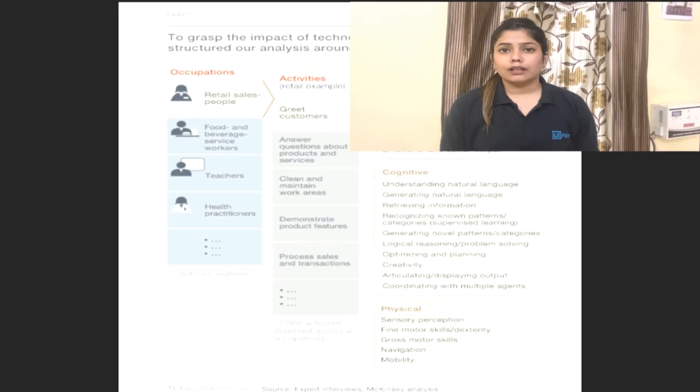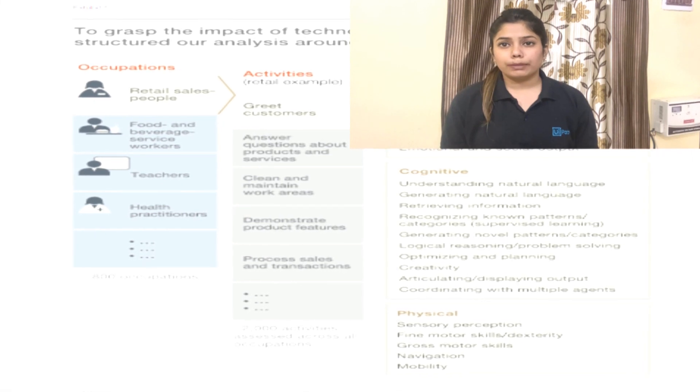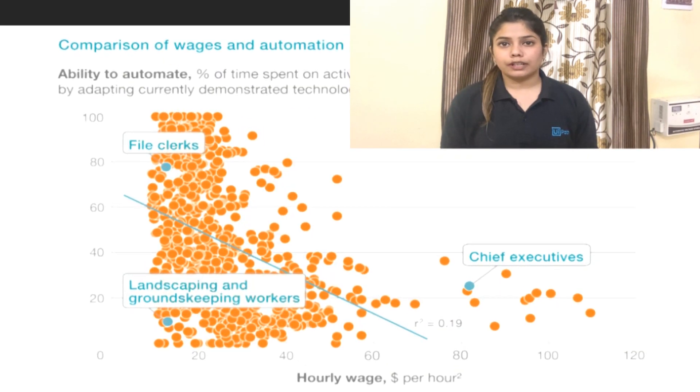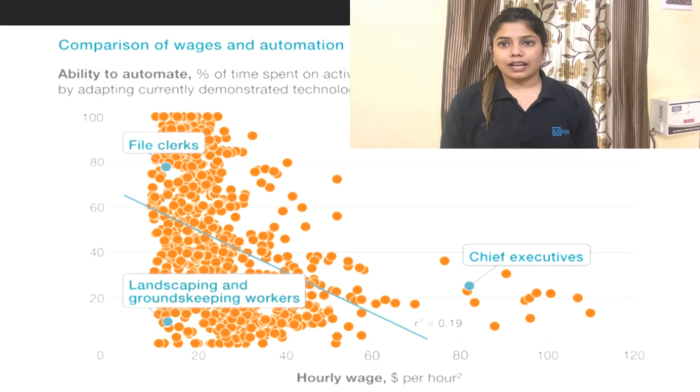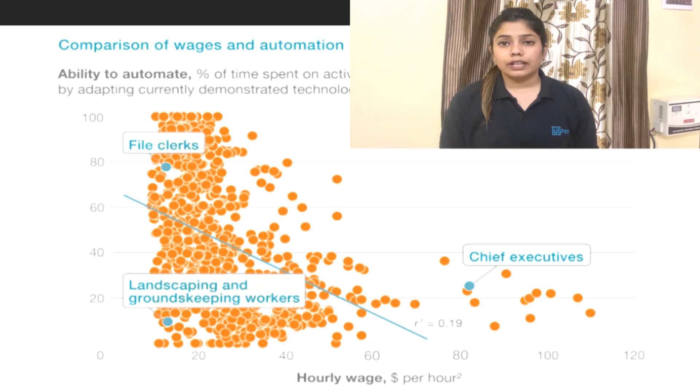Whether you're a fresh college grad or already working in another domain and want to switch to RPA or add it as an extra skill — the use cases for RPA are huge. According to a survey by McKinsey, as many as 45% of the activities individuals are paid to perform can be automated using currently demonstrated technology. It's a myth that automation primarily affects low-wage roles.